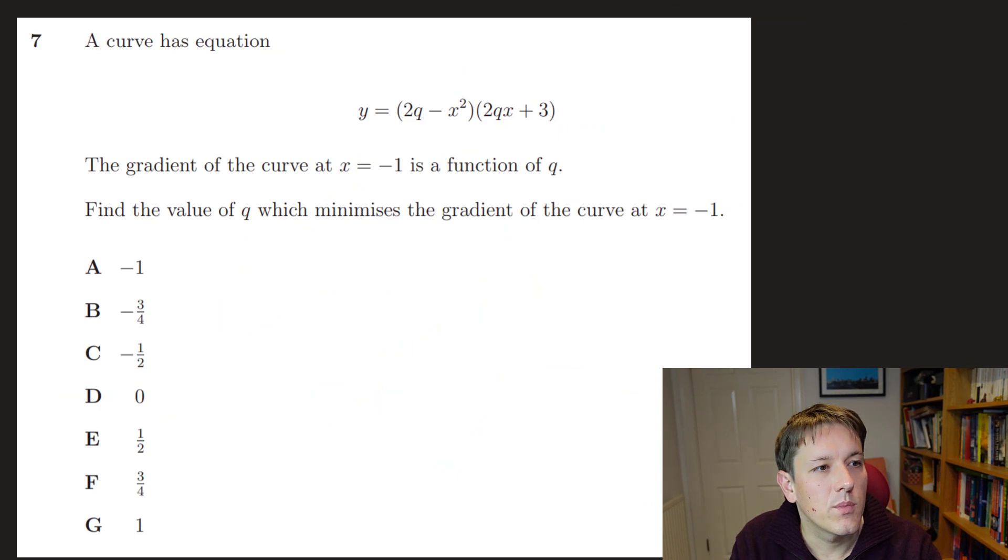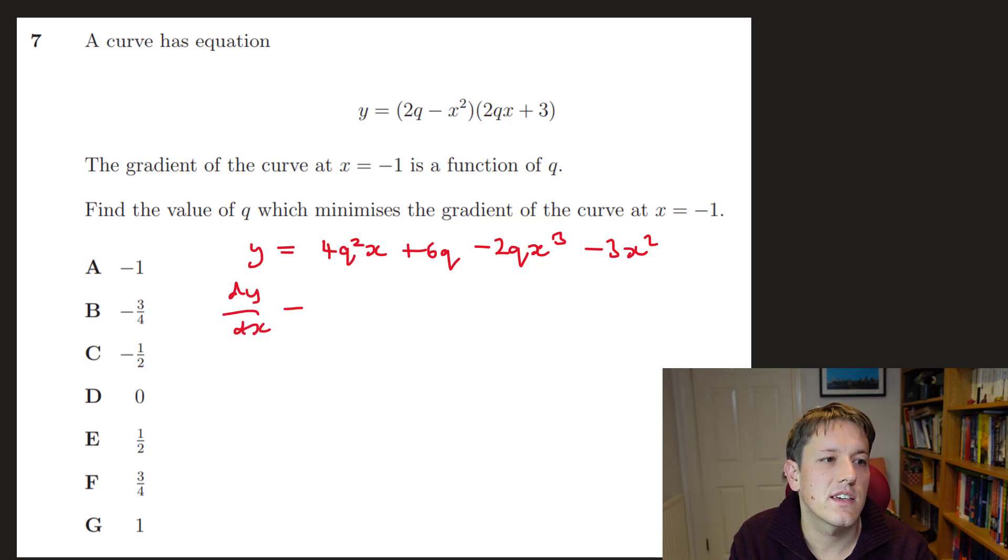OK, in question 7, we've got a curve given with this equation. And it says the gradient of the curve at x equals minus 1 is a function of Q. Find the value of Q which minimizes the gradient when x equals minus 1. Well, nothing to do here apart from multiply out and differentiate. We know the formula for the gradient is going to be given by dy by dx. So let's just multiply this out and get 4Q squared x plus 6Q minus 2Qx cubed minus 3x squared. So dy by dx here is going to be 4Q squared. This one goes to 0. And I get minus 6Qx squared minus 6x.